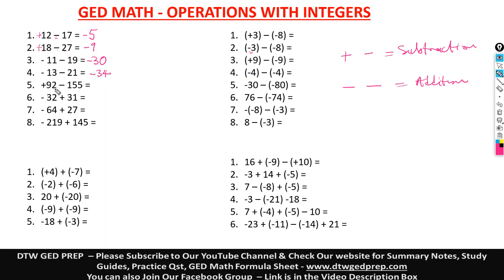Here we have 92, a positive, and a negative — we do subtraction. When you have two opposite signs, you do subtraction. When you have the same signs, you do addition. That is basically the sign rule for addition and subtraction.